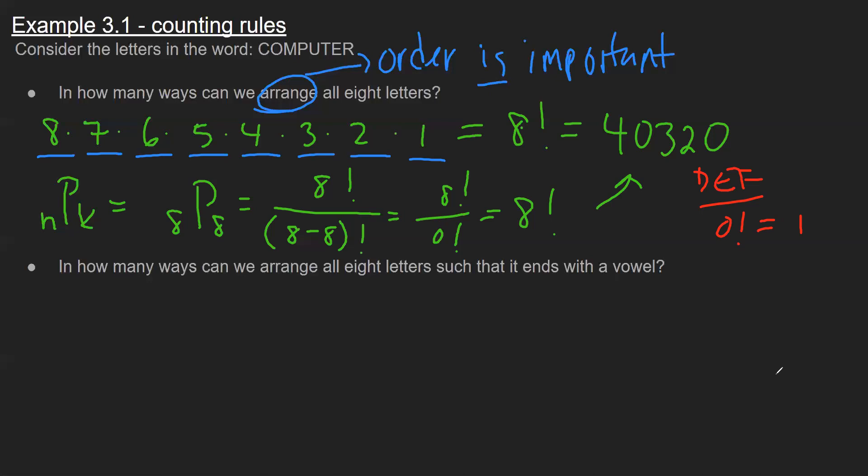All right. In the example below, very similar. Now we have a restriction. So again, we're going to highlight that this says arrange all eight, but now I have a restriction that it ends in a vowel. So very similarly, I can start off with eight positions.